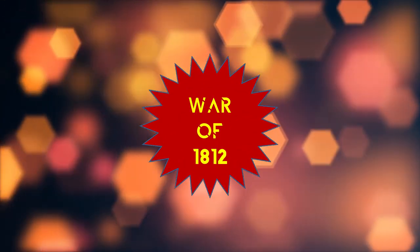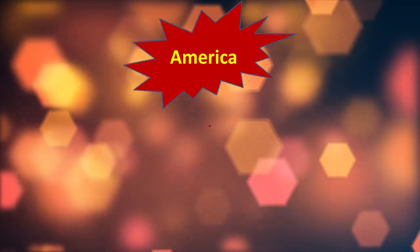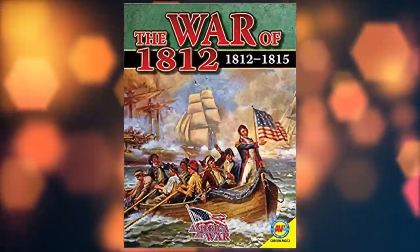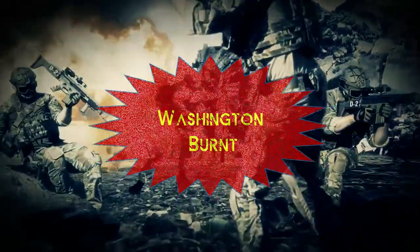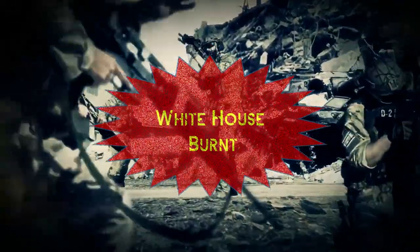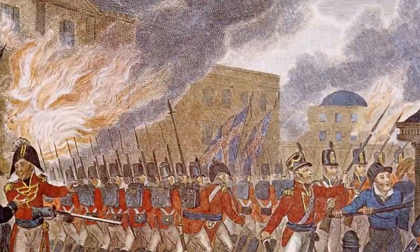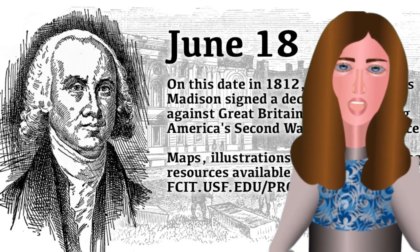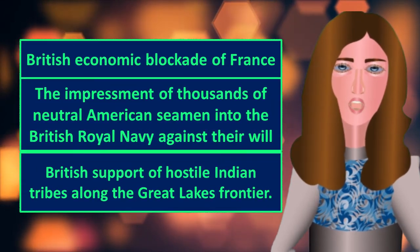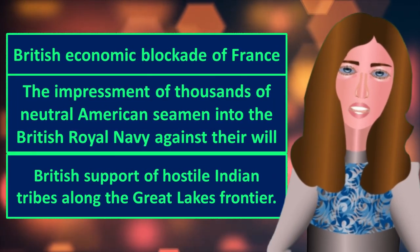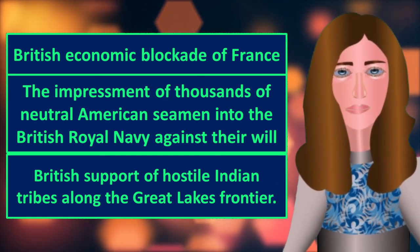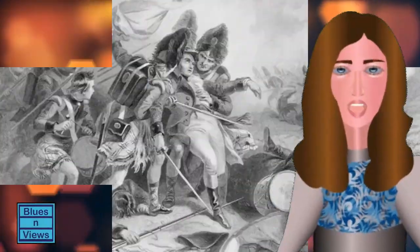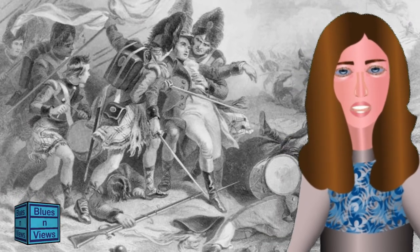War of 1812, fought between the United States of America and the United Kingdom during 1812 to 1815. In June 1812, the United States declared war against Great Britain in reaction to three issues: the British economic blockade of France, the impressment of thousands of neutral American seamen into the British Royal Navy against their will, and the British support of hostile Indian tribes along the Great Lakes Frontier. After many battles, the war was ended in 1814 by the Treaty of Ghent.